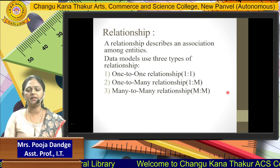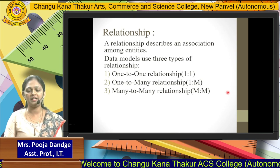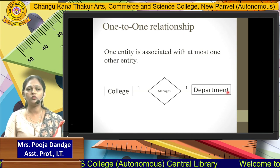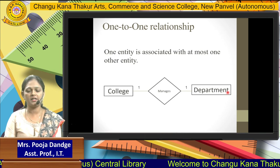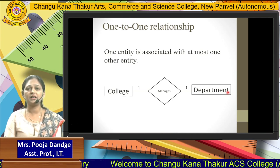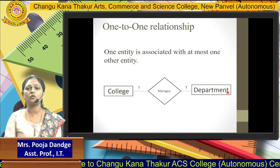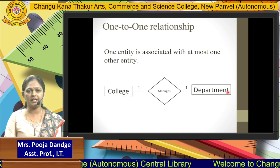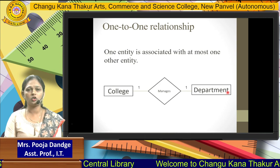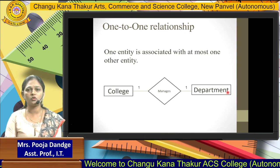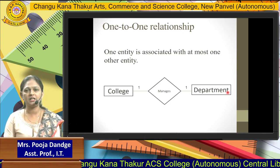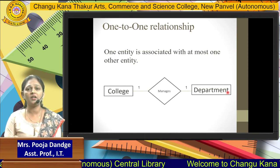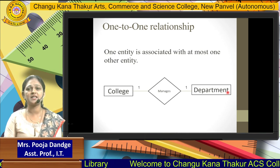The first type is the one-to-one relationship. One-to-one relationship means one entity is associated with at most one other entity. For example, a college is one entity and it manages one department. Consider one particular college and one particular department like IT — that college manages only one IT department because only one IT department is present in that college. So that relationship is a one-to-one relationship.